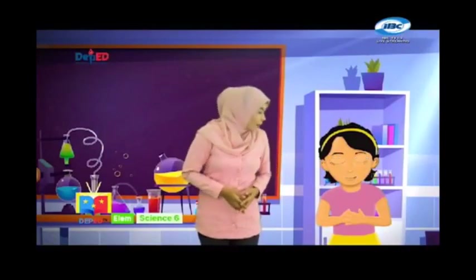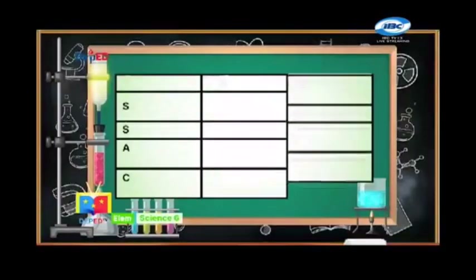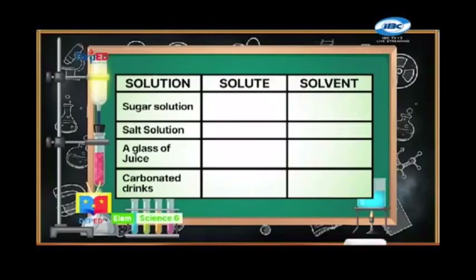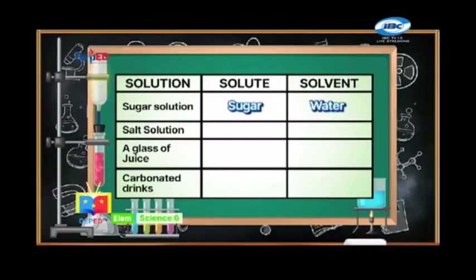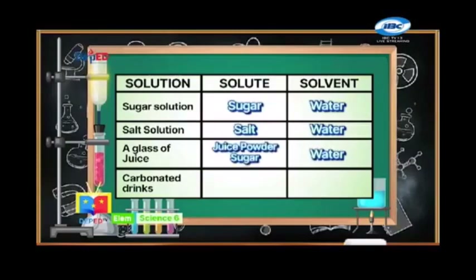We have Cece here again. She needs to identify the solute and solvent of four solutions and fill in the table. Let's help our friend Cece! In the sugar solution, the solute is sugar and water is the solvent. In the salt solution, the solute is salt and water is the solvent. In the glass of juice, juice powder and sugar are the solutes and water is the solvent.